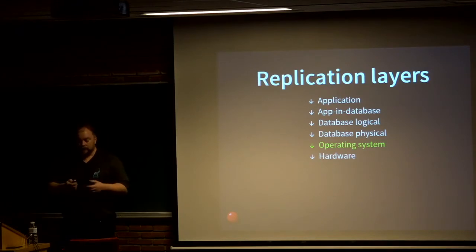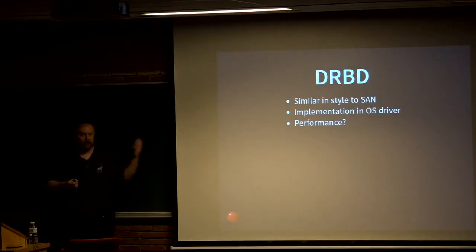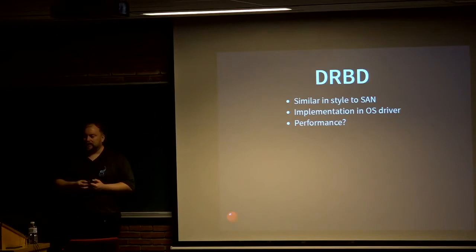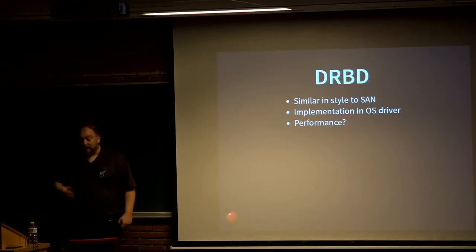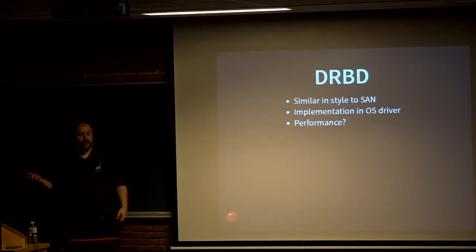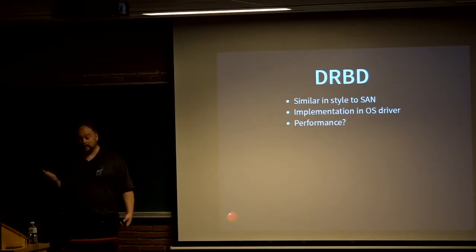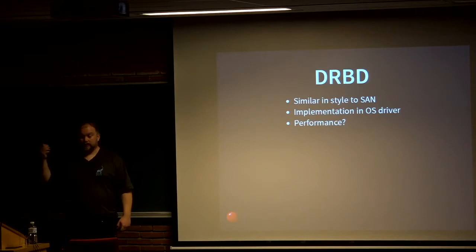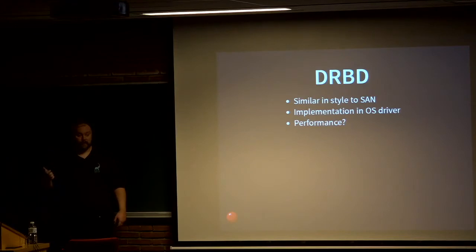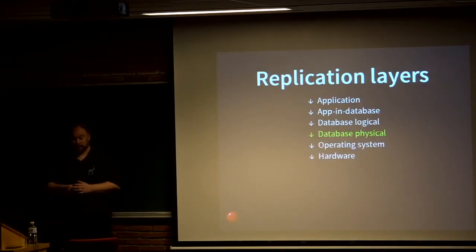Moving up the stack to the operating system level: DRBD is probably the most common one, at least in the Linux world. We're doing basically the same thing as a replicated SAN, except it's a driver in your operating system instead of somebody else's operating system. It works and fails in sort of the same way as typical SANs. It usually has a lot less performance. If you're only worried about hardware failure of your hard drives, it's not a bad choice for a system where you don't need high performance. It replicates your disks over TCP at a block level, so it doesn't know what data it's replicating. Again, not very Postgres-specific, so we'll skip past that one as well.